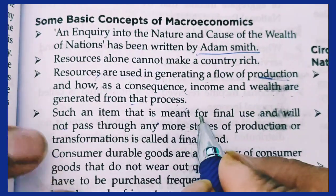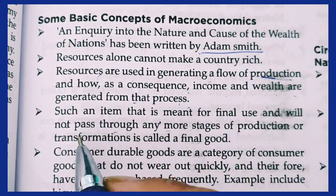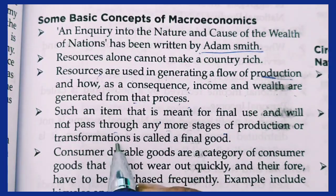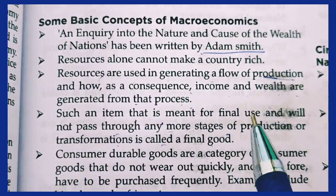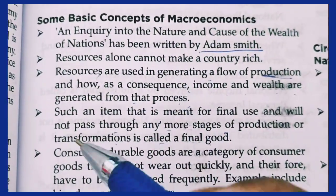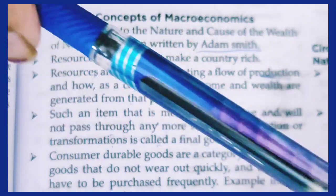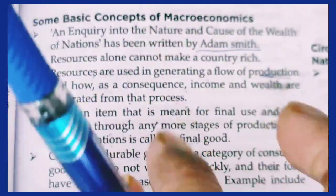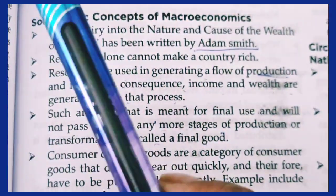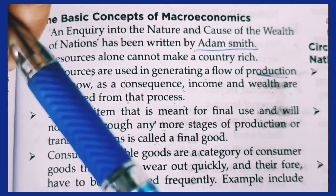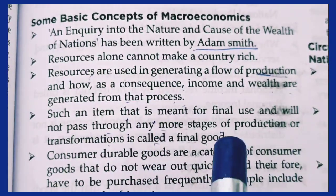An item that is meant for final use and will not pass through any more stages of production or transformation is called a final good. As a consumer, when I am using a product as its end consumer, it is called the final good.